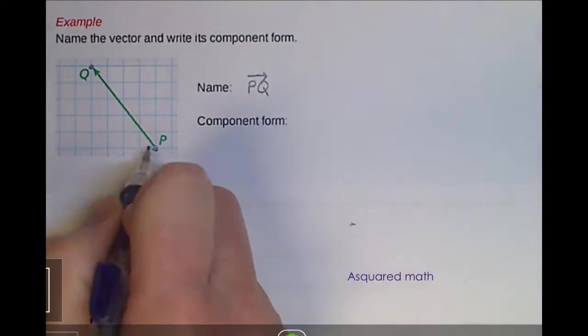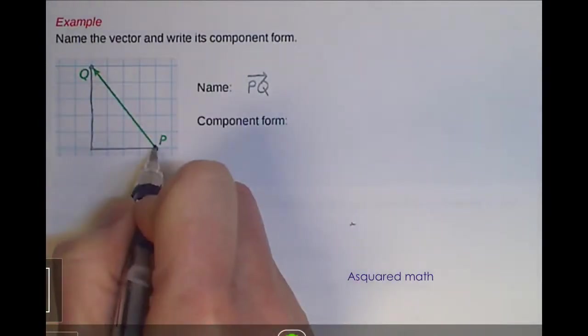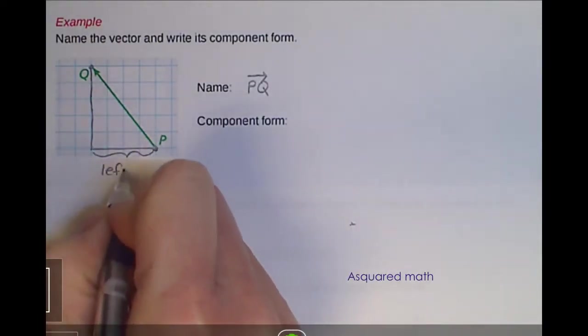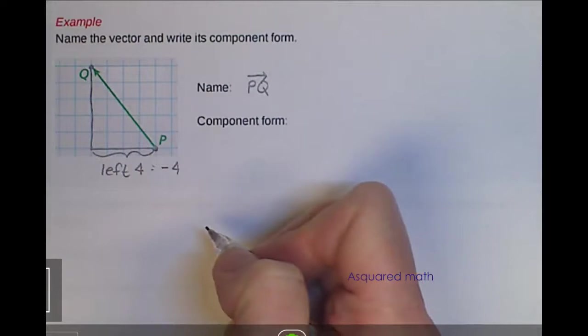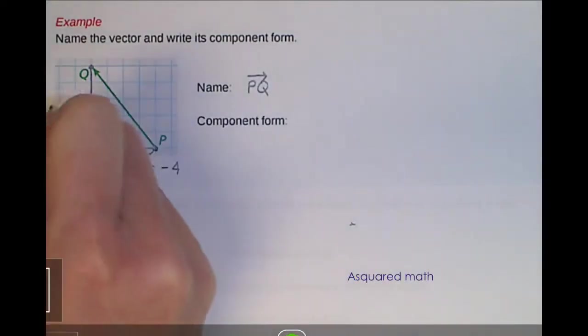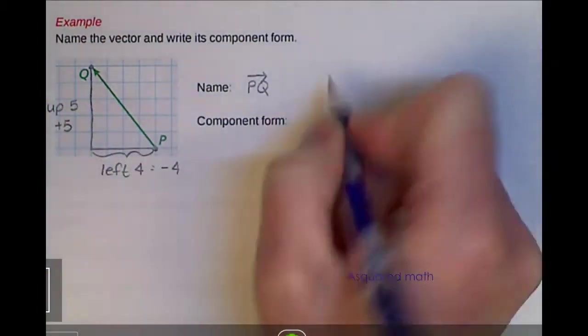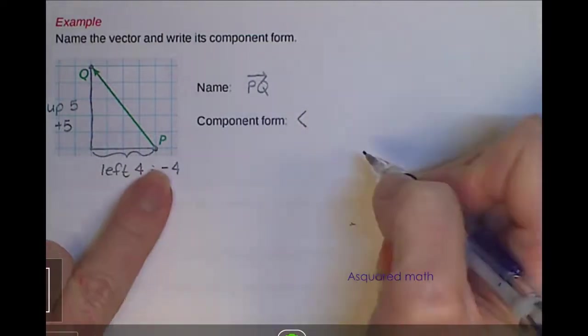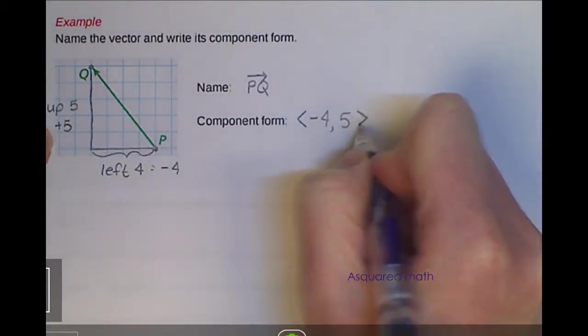Component form, if we break this up into a right triangle, you can see that in order to go from P to Q, we are moving left 4 spaces, or this is a negative 4. So if we're talking just number form, we need negative 4 because it's moving in the left, the negative direction of x. And then over here for our y component, we're going up 5 units. So this would then be a positive 5.